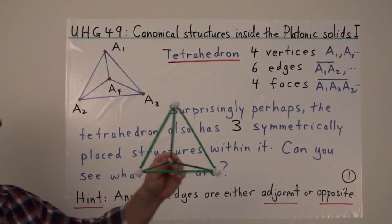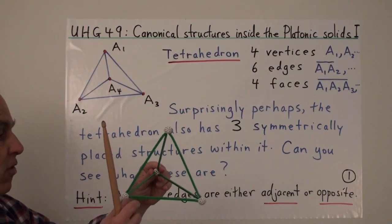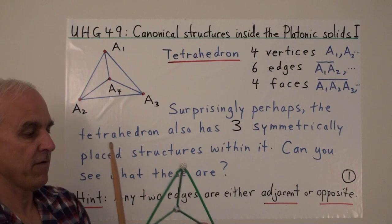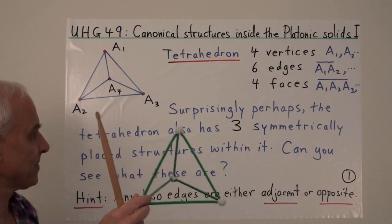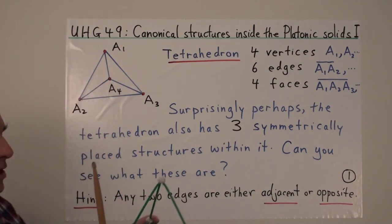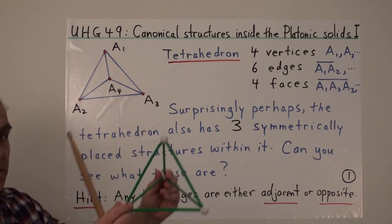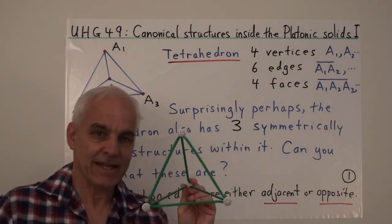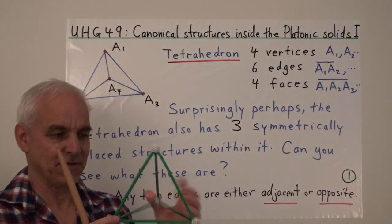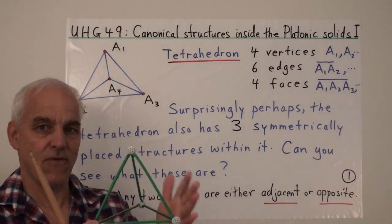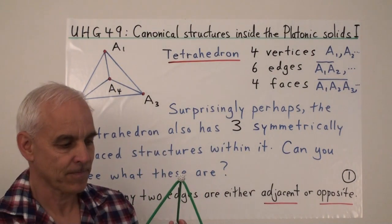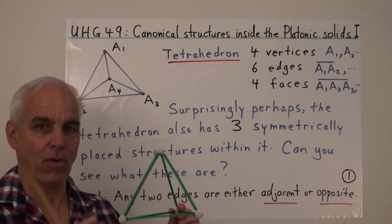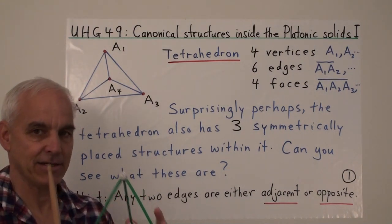Our basic object today is the tetrahedron: four vertices, six edges, and four faces. Here's our view with vertices A1, A2, A3 towards you and A4 at the back. This thing obviously has four-fold symmetry because there are four vertices and four corresponding faces. Surprisingly, there's also a three-fold symmetry inside this structure.